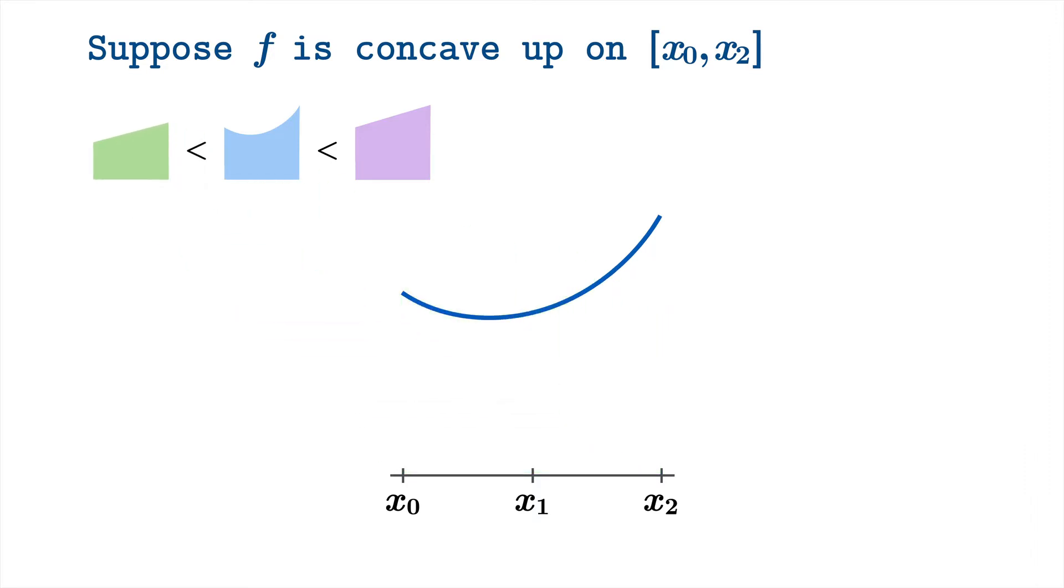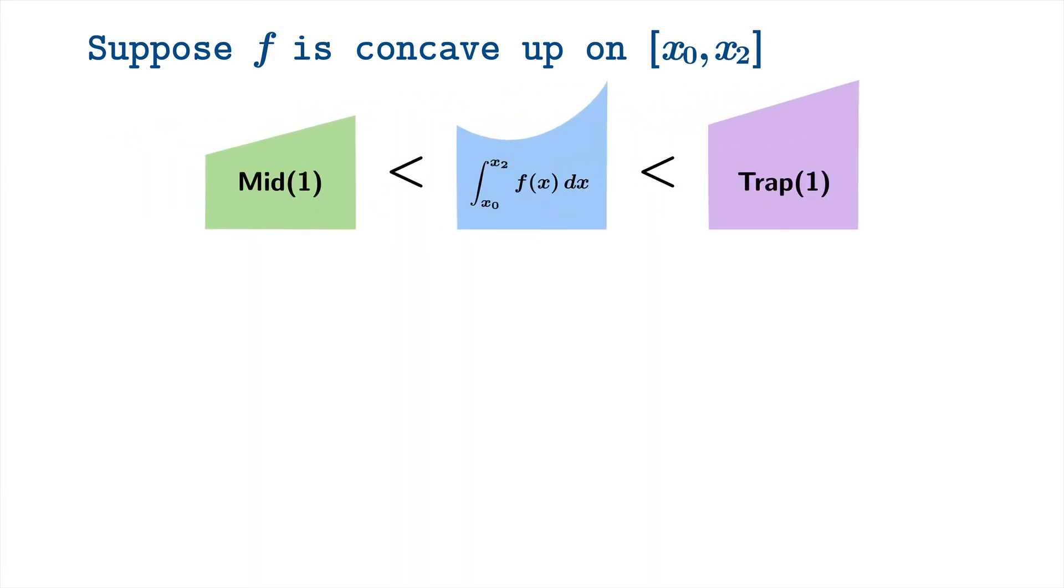As long as the concavity doesn't change, as long as it's concave up throughout this interval, we can see that the actual area is trapped between an application of the midpoint sum with one division and an application of the trapezoid sum with one division.